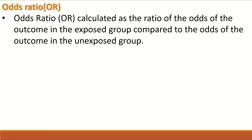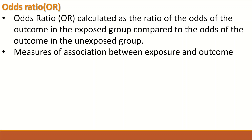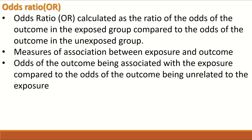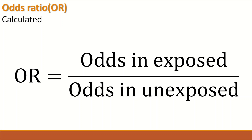Odds ratio is calculated as the ratio of the odds of the outcome in the exposed group compared to the odds of the outcome in the unexposed group. The odds ratio is an effect size — an estimate that measures the level of association between exposure and outcome. You have two variables: one for exposure and one for outcome, and the association between those two variables is calculated.